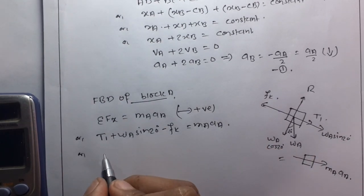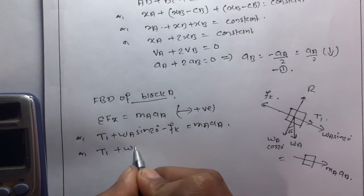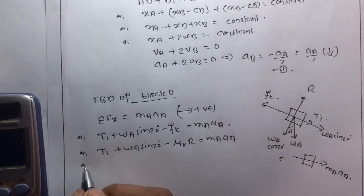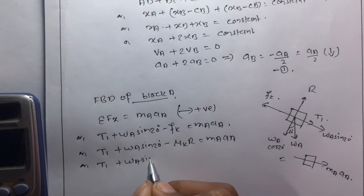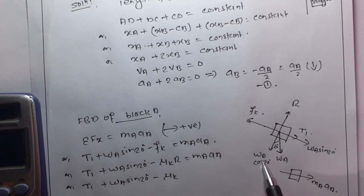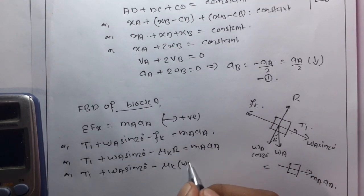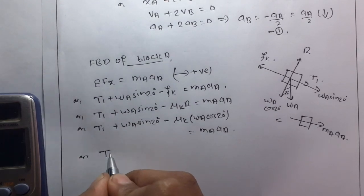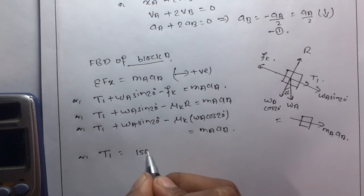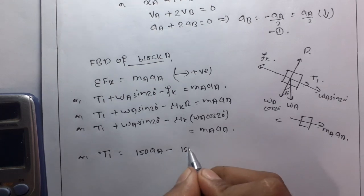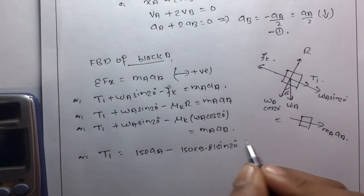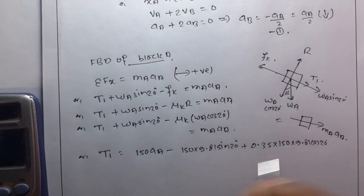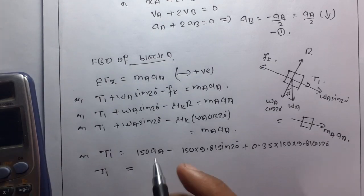From the free body diagram, T1 plus wA sin 20 degrees minus fk equals mA times aA, or T1 plus wA sin 20 degrees minus mu_k times wA cos 20 degrees equals mA times aA. With mu_k equal to 0.35, mass 150 kg, and g equal to 9.81, substituting gives T1 equal to 150 aA minus 19.317. This is equation number two.